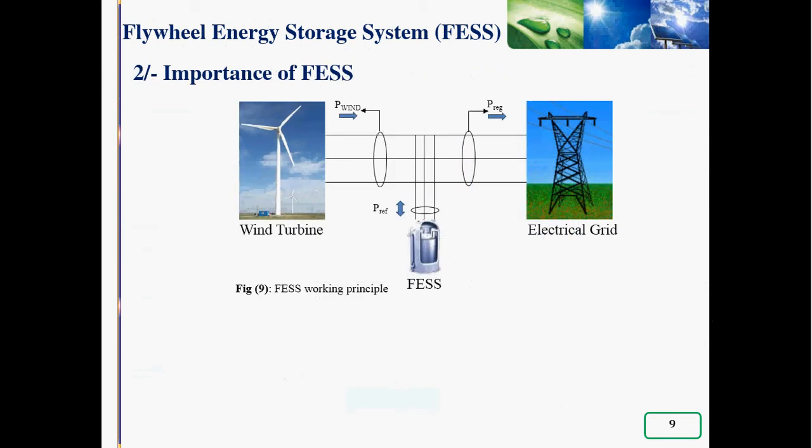In order to show the behavior of FESS in microgrid, we propose a microgrid depending only on one type of renewable energy, which is wind connected to the grid in presence of FESS, as shown in figure 9. The power delivered to the grid is symbolized by P_reg, and the wind profile enables to generate an active power P_wind.